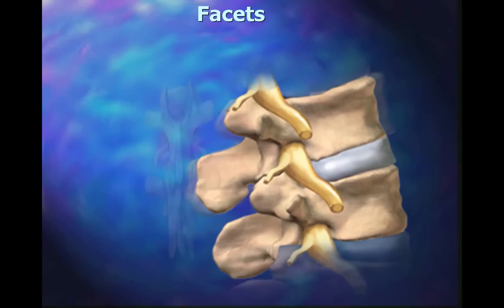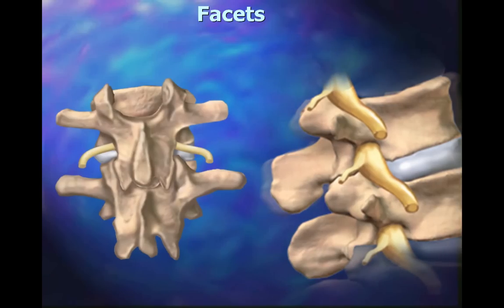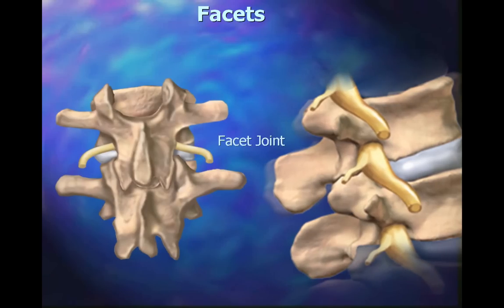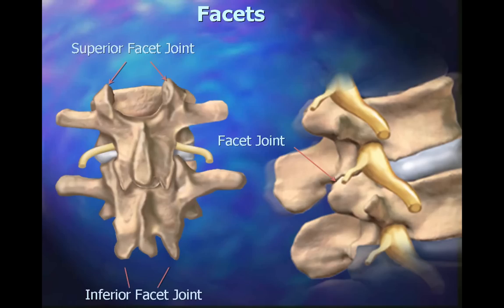Each vertebra has two sets of Facet Joints. One pair faces upward — the superior Facet Joint — and one pair faces downward — the inferior Facet Joint. There is one superior and inferior joint on each side of a vertebra, the right and the left.